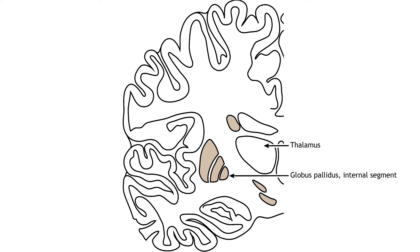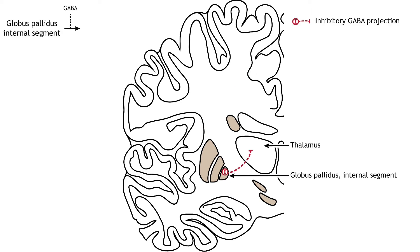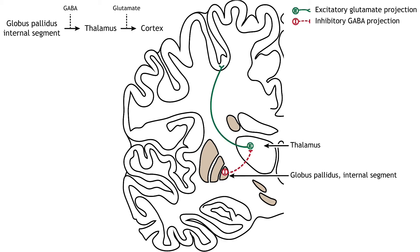The primary output region of the basal ganglia is the internal segment of the globus pallidus. This region sends inhibitory GABAergic projections to nuclei in the thalamus. This inhibitory output has a tonic constant firing rate, which allows the basal ganglia output to both increase and decrease depending on the situation. The thalamus then projects back out to the cerebral cortex, primarily to motor regions.